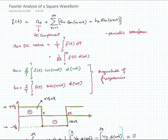In this lecture we will discuss the Fourier analysis of square waveform. Here you can see the expression for the Fourier series analysis. This is the DC component, these are the cosine frequencies, and then there are the sine frequencies. an and bn are the Fourier series coefficients representing the magnitude of the cosine and the sine frequencies.